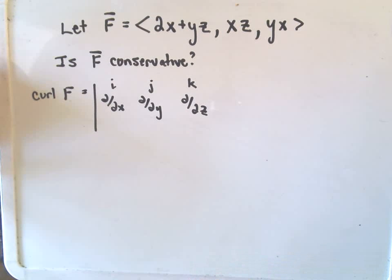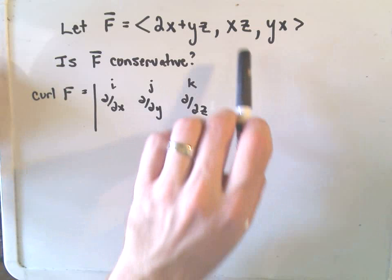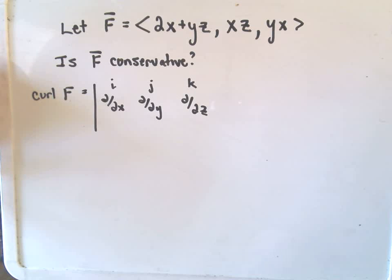So my question here is, suppose we have the vector field F that's represented by 2x plus yz, xz, and then yx, and we just want to know if it's conservative.